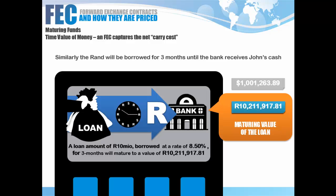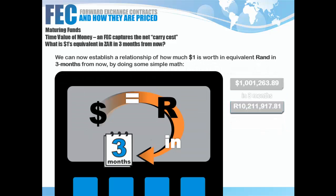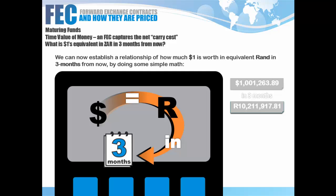Similarly, the rand component borrowed from the money market is also increasing in value. I borrowed 10 million rands but I'm being charged 8.5% interest, so by the end of three months I need to repay 10,211,917.81 rand. Now if we've calculated the maturing value of both the loan and the deposit, we've effectively linked the values with each other. We can now establish a relationship: what is one dollar worth in three months in equivalent rand terms?